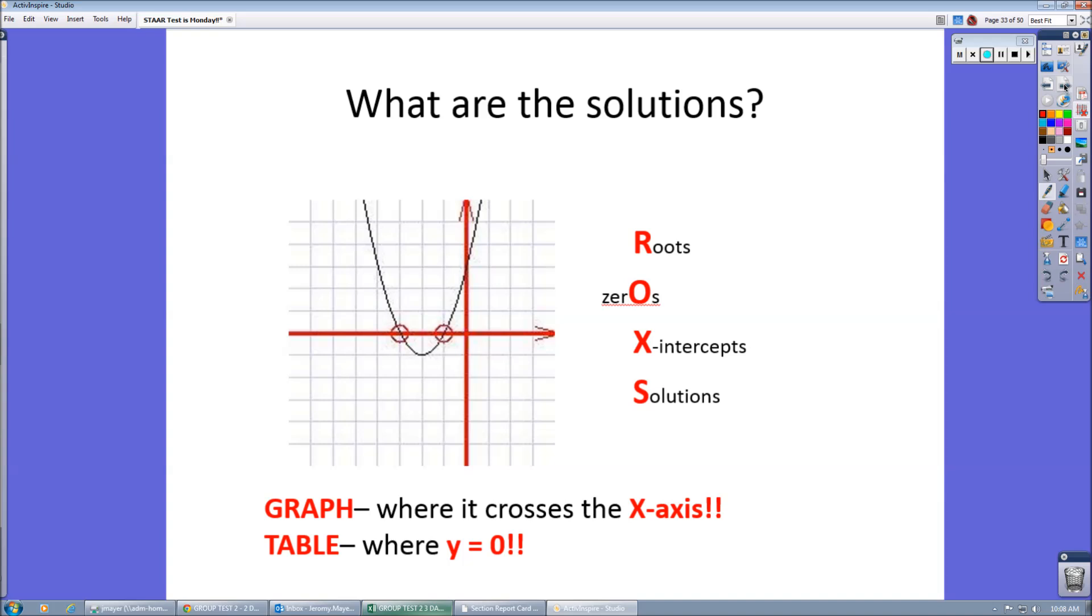Where a parabola crosses the X axis, that is a fancy way of saying those are the roots, the zeros, the x-intercepts, the solutions. So be careful. The test could use any of those vocabulary words, but just remember, it's just where it crosses the X axis.